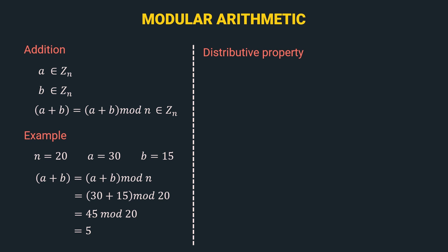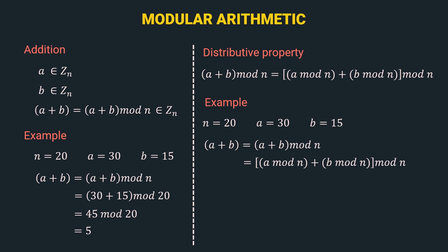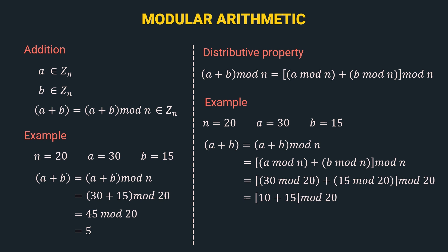Now, let's understand the distributive property of the mod operator in addition. So here, we can distribute the mod operator over the addition operation. So, we can apply a mod n plus b mod n, but again we have to apply the mod n operator so that the output is in the Zn set. Let's understand using an example with n is 20, a is 30, and b is 15. The formula is a plus b equals (a plus b) mod n. Then we apply the distributive property: (a mod n plus b mod n) mod n. That is equal to (30 mod 20 plus 15 mod 20) mod 20. Now, 30 mod 20 gives 10 and 15 mod 20 gives 15. Then finally, we have 25 mod 20 which is again 5. We can see both outputs are the same — 5 — and hence the distributive property holds true.